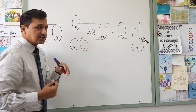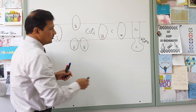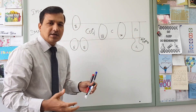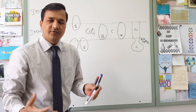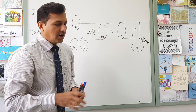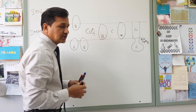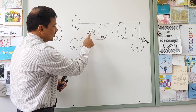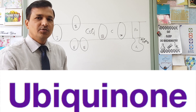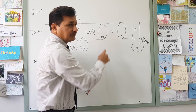These are the four fixed complexes in the electron transport chain. We also have ATP synthase, sometimes referred to as Complex 5. Additionally, we have two mobile complexes: coenzyme Q, also called ubiquinone, and cytochrome C.